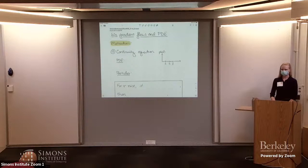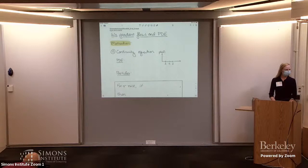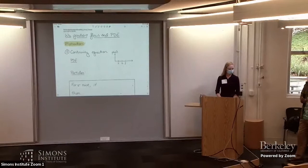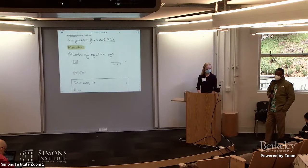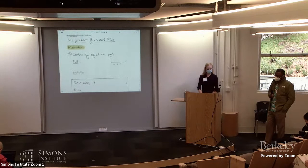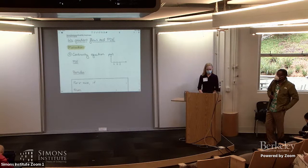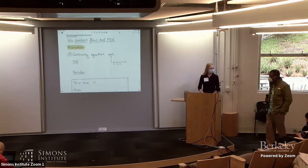Welcome to this morning session. The first and second lectures will be given by Katie Craig, faculty assistant professor at UC Santa Barbara. Katie obtained her PhD in 2014 at Radberg University with Eric Carlin, then had an NSF postdoc position at UCLA and the UC Presidential Postdoc Fellowship before joining the faculty at UC Santa Barbara. Today she will talk about gradient flow in the Wasserstein metric.